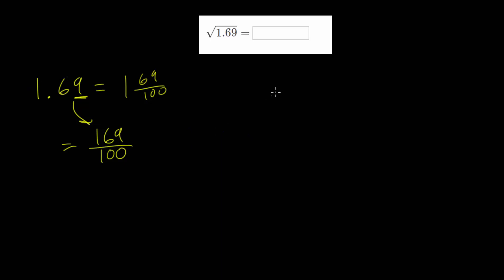So from here, we can take the square root of this 1.69. Like I mentioned, we just rewrite it as a fraction. So we have root 169 over 100. And then we're just going to take the square root of the numerator, and divide it by the square root of our denominator. So the square root of 169, that is 13, since 13 times 13 is 169. And the square root of 100 is 10.